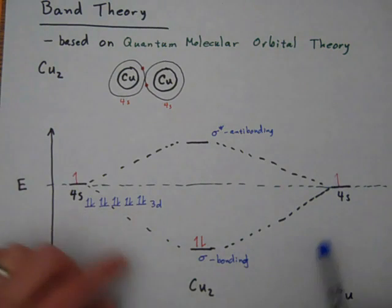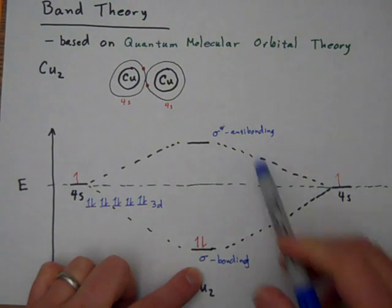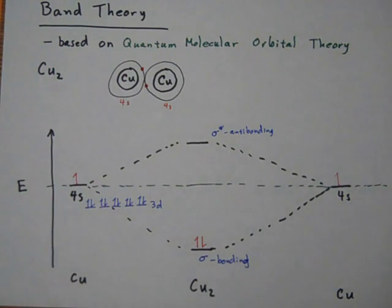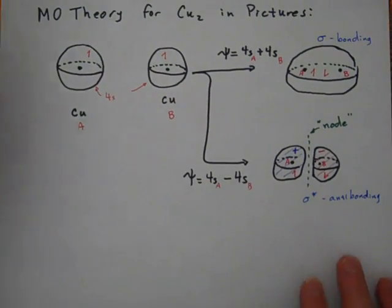This orbital, when we overlap two s orbitals, has something that we call sigma symmetry. So we call this a sigma bonding orbital. This orbital up here, denoted sigma star, is an antibonding orbital. And notice that it's unoccupied. We don't have any electrons up there right now.